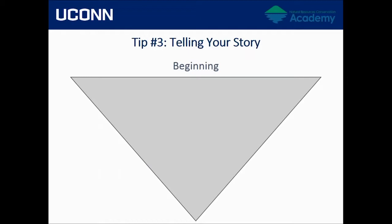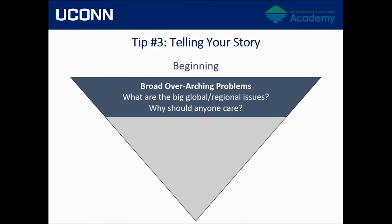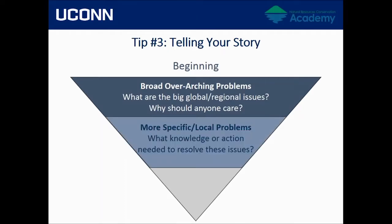Your first statement should tell the reader the broad overarching problem — a global or regional issue. For example, if your project is on conserving land trust property for a migrating bird species, you might start by talking about biodiversity loss, how this loss is occurring a thousand times faster than pre-human times and is largely due to land use. Then talk about why biodiversity is important, before bringing it to your specific town or region.